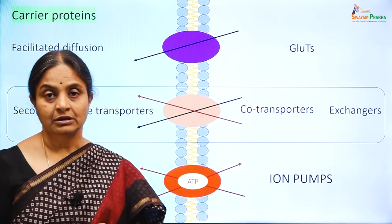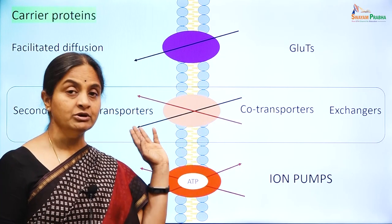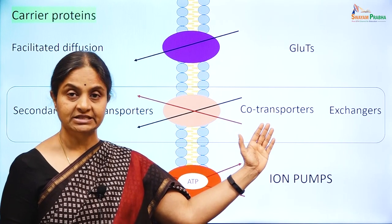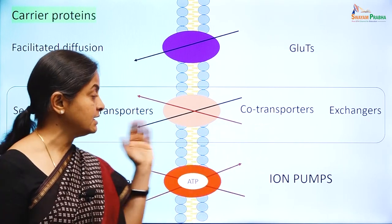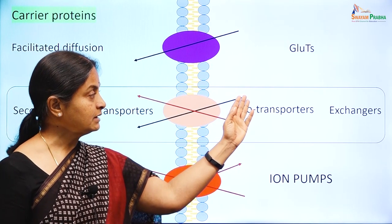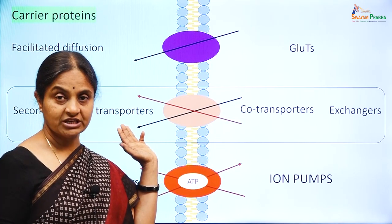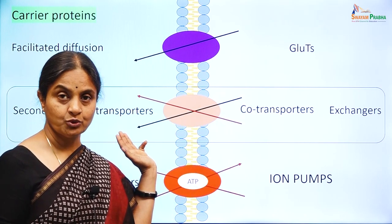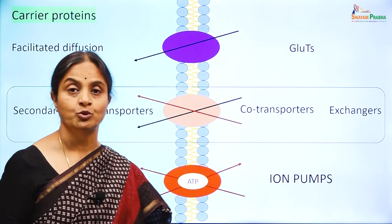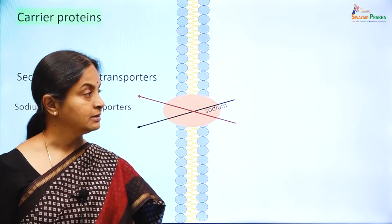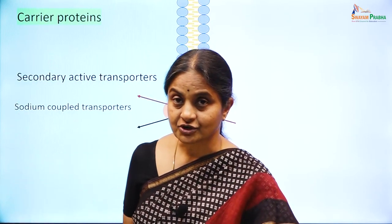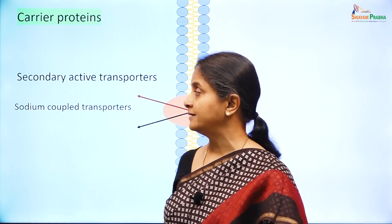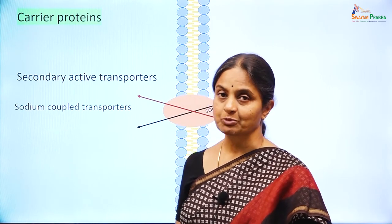Active because one substance is transported uphill, and secondary because this uphill transport is energized by the downhill transport of another substance. Most often the substance that goes downhill is sodium. Sodium concentration outside is 10 times higher than inside the cell, so sodium can diffuse into the cell, and its downhill movement energizes uphill transport of another substance. The secondary active transporters important in the clinical context are sodium-coupled transporters.